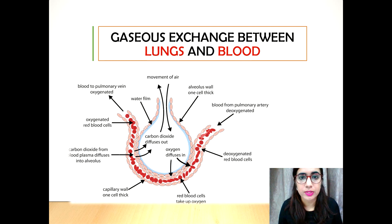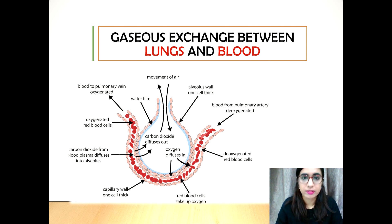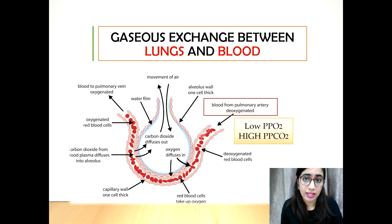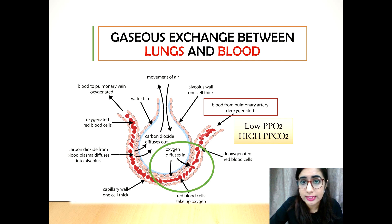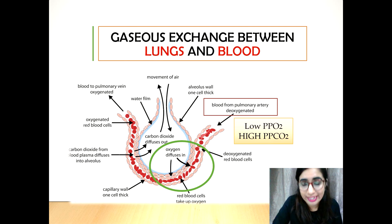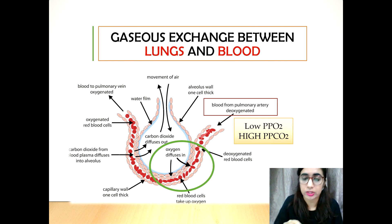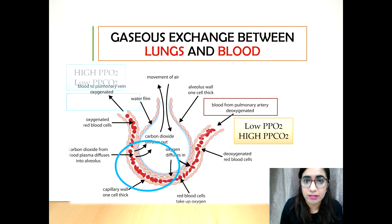Now let's look at gas exchange between lungs and blood — the first level. Blood from the pulmonary arteries that enters the blood capillaries surrounding the alveoli carries a low partial pressure of oxygen and a high partial pressure of carbon dioxide compared to the air within the alveoli. Oxygen in the alveoli dissolves in the moist lining of the alveoli and then diffuses following the partial pressure gradient across the alveolar membrane into the blood capillaries.